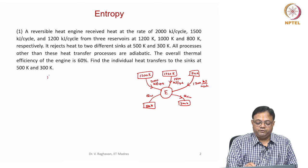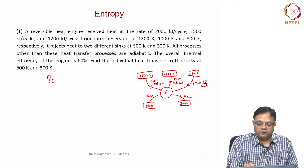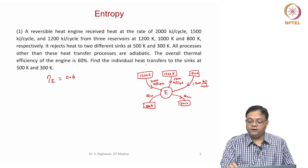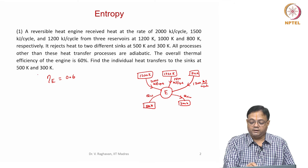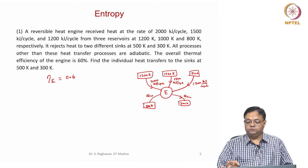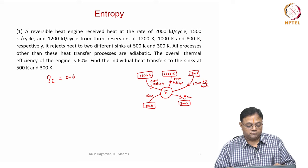The overall thermal efficiency of the engine is 60 percent, that is 0.6. Find the individual heat transfers to the sinks at 500 and 300 Kelvin, that is Q_C1 and Q_C2.